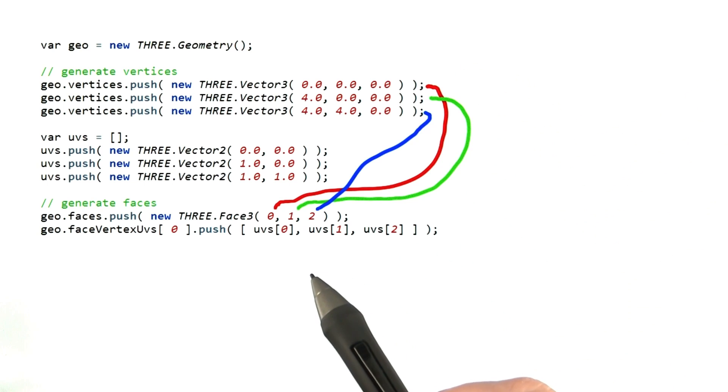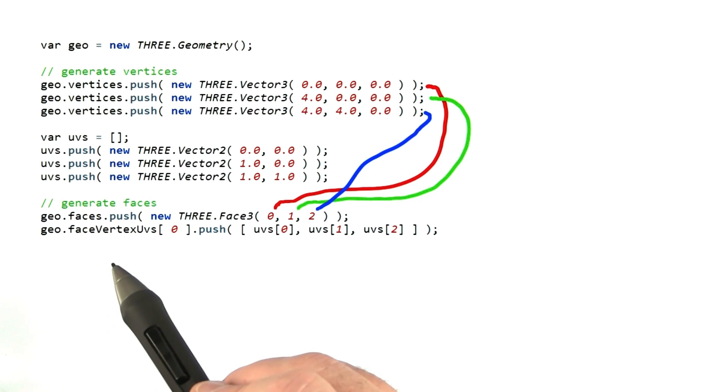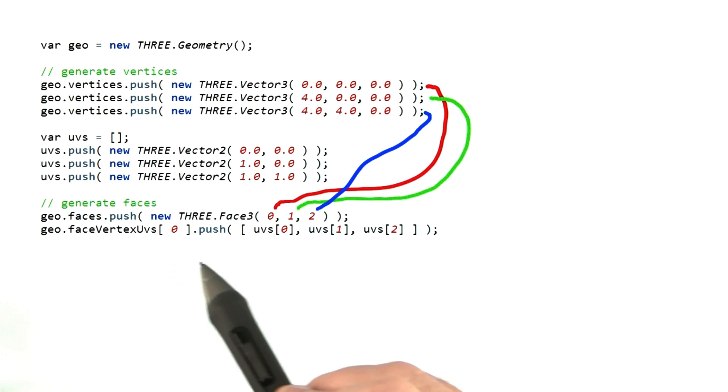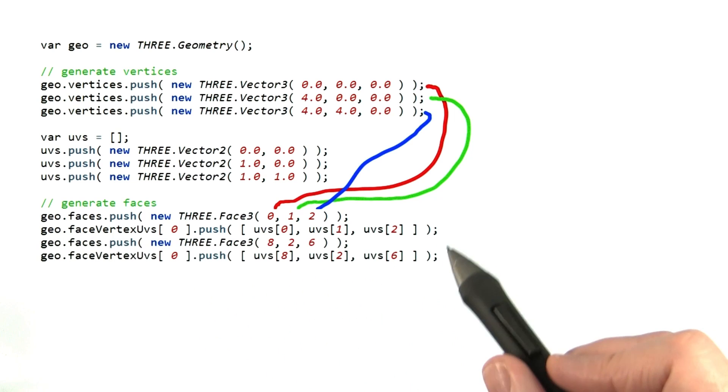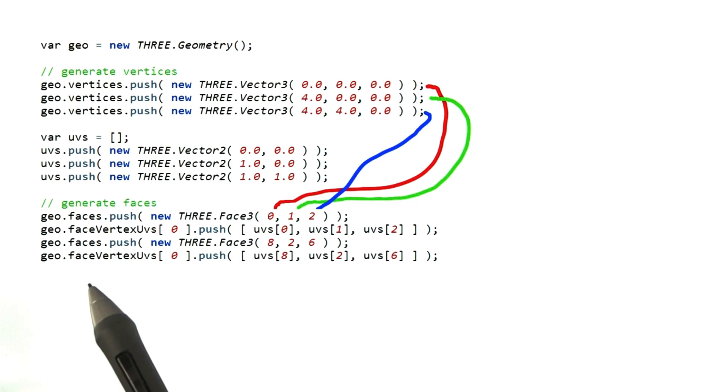The way the three UVs are attached to this face is a little non-standard. The first element of the face vertex UVs is accessed, and the three UVs we want to use for this face are directly placed there. If you want to add more faces with UVs, note that you'll access the face vertex UVs class the same way each time. You'll access array element zero and pass in the three UVs desired.